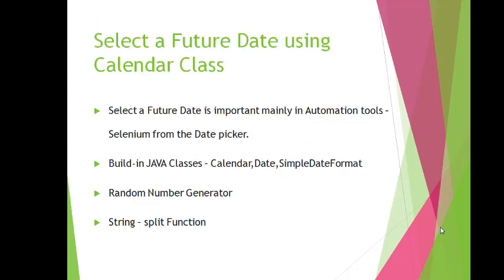To select a future date using the Calendar class, we have to understand it from the Selenium perspective. In Selenium, websites have date pickers which are useful to select a future date. From the Java perspective, there are built-in classes such as the Calendar class, Date class, and SimpleDateFormat class, which are useful to generate a future date from the current date — for example, 10 days from now or 20 days from now. If we want to generate that number randomly, we need the Random class available in the Java API.